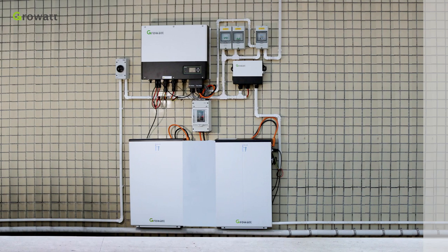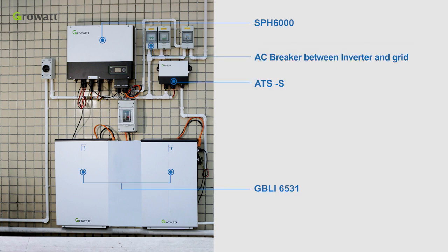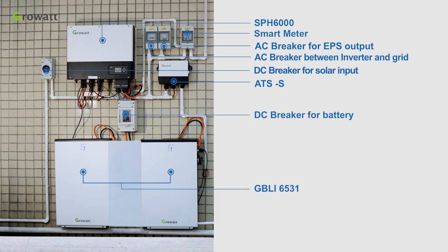Here is the final energy storage system including SPH 6000, GBLI 6531, ATS, AC breaker between inverter and grid, AC breaker for EPS output, smart meter, DC breaker for battery, DC breaker for solar input.